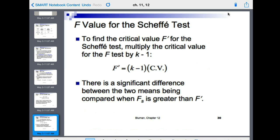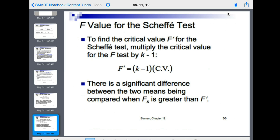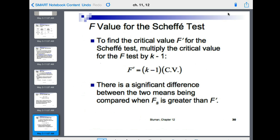To find the critical value F prime for the Scheffé test, multiply the critical value from the F test by K minus 1. When we did the F test to begin with, now we take K minus 1 times that. There is a significant difference between the two means being compared when Fs is greater than F prime.